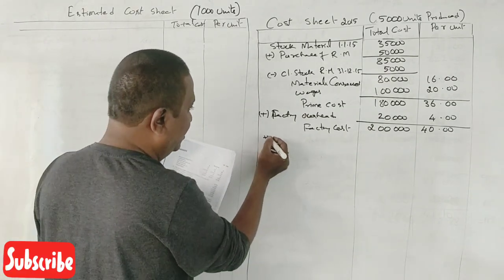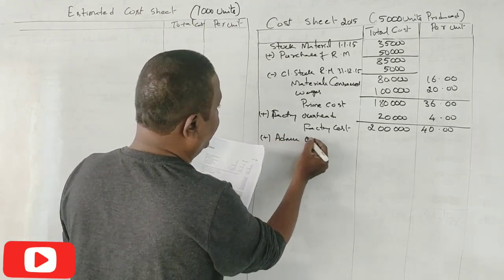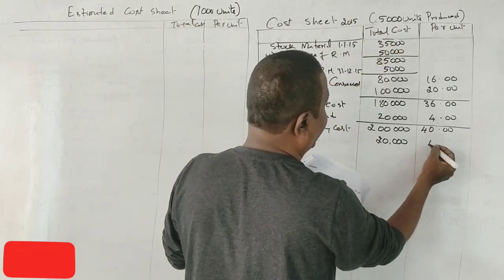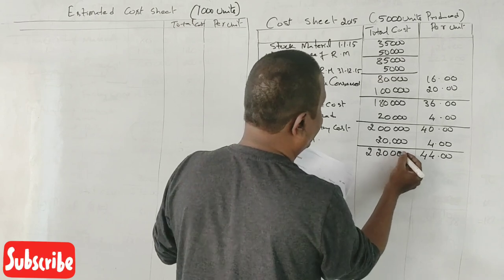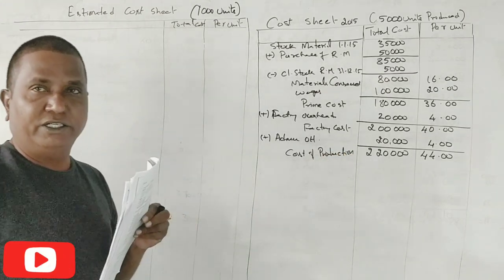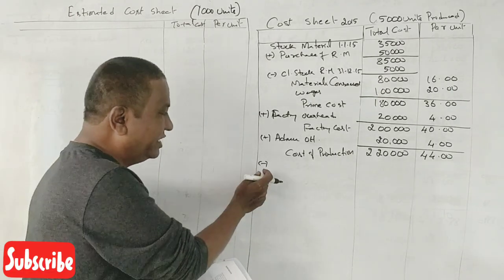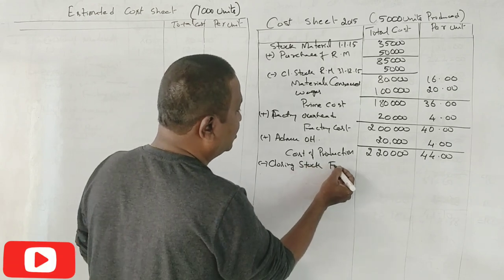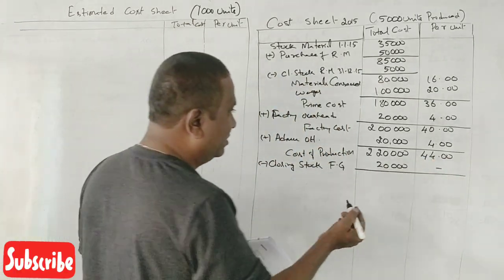To this factory cost, we add office administration overhead. What is the administration overhead? ₹20,000. 20,000 divided by 5,000 is ₹4 per unit. It becomes ₹44 per unit and ₹2,20,000 total. This is called cost of production. To this cost of production, we subtract the closing stock of finished goods. Please don't calculate closing stock per unit — leave it as ₹20,000.